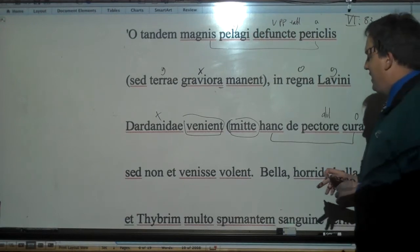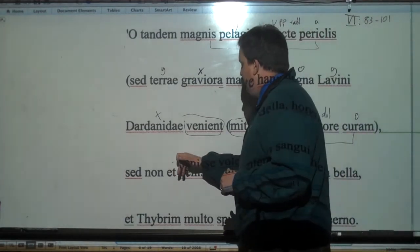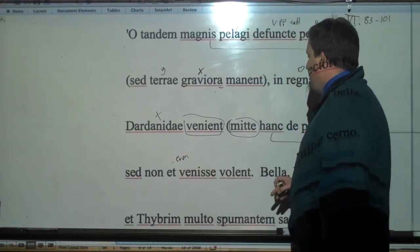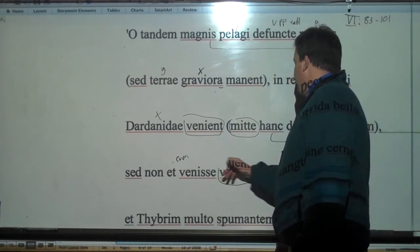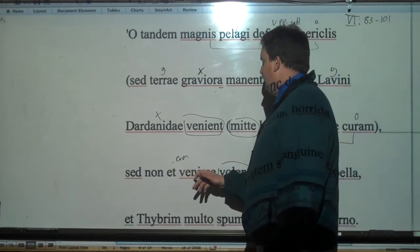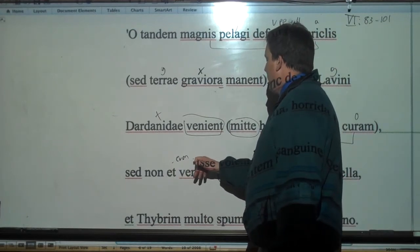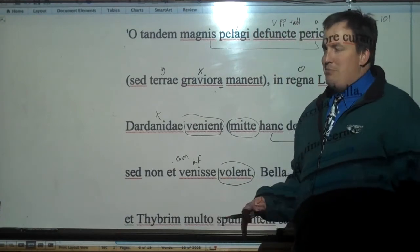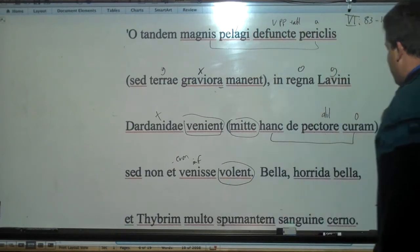But she says, et here is probably most likely 'even'. Remember et can mean 'and' but it can also mean 'even'. But even they will wish, future, not even to have come, perfect infinitive. So you're going to get to Italy but you're not going to wish you were there. She's such an uppercut.